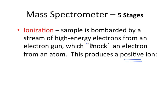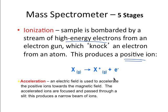It's using a stream of electrons to produce a positive ion. It would be represented by this type of equation. The neutral element in the gas form becomes the positive ion in the gas form, and then we have the electron being stripped off. The next step is the acceleration step. An electric field is used to accelerate those positive ions toward the magnetic field. The accelerated ions are focused and pass through a slit. This produces a narrow beam of ions.